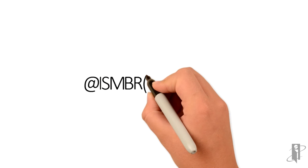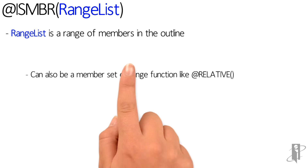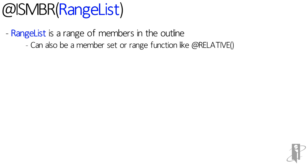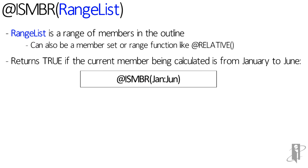There's another way we can use isMember where we can specify a range of members. You can either hard code that range, or you can use a member set or range function that returns a range of members. If I wanted to hard code it, I could say isMember Jan colon June, and that will return true if the member being calculated was January, February, March, April, May, or June.